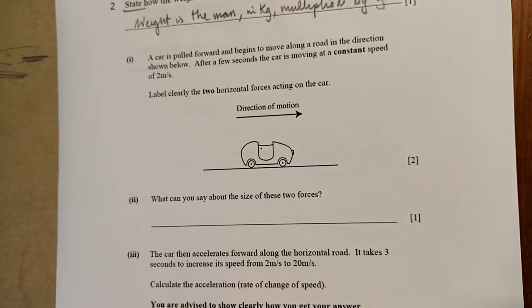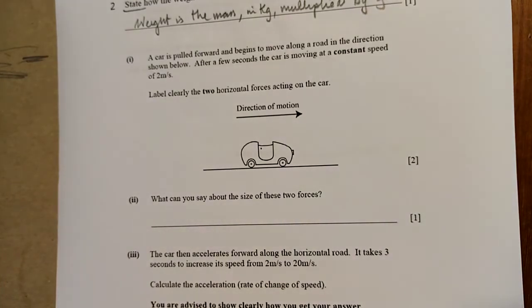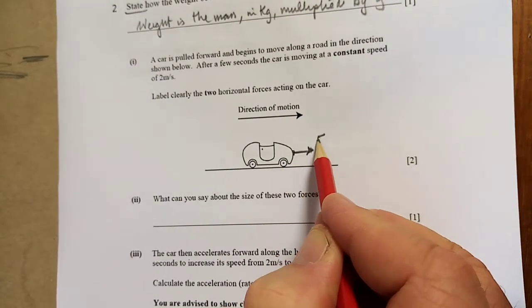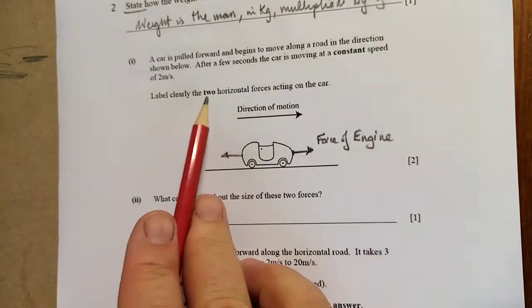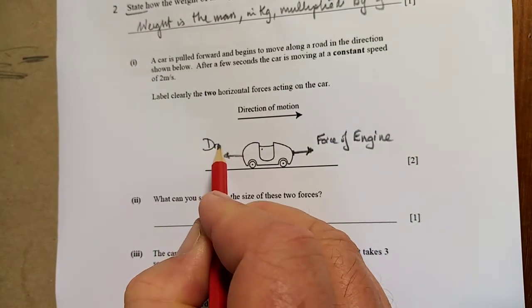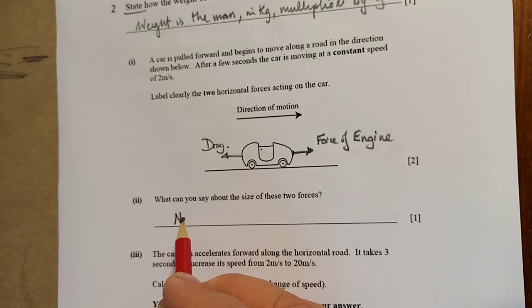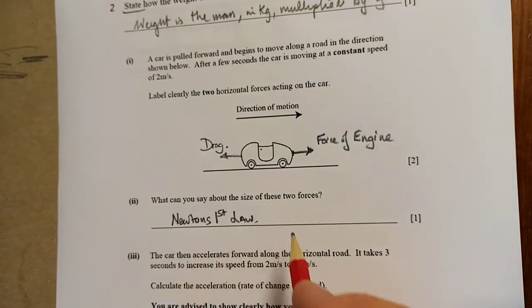A car is pulled forward and begins to move along a road. After a few seconds the car is moving at a constant speed. So constant speed and the forces are balanced. Label clearly the two horizontal forces acting on the car. The force pulling it is the force of the engine. And the other one would be the drag, and they are equal and opposite because they are balanced. What can you say about the size of these two forces? They're balanced. So that's Newton's first law.